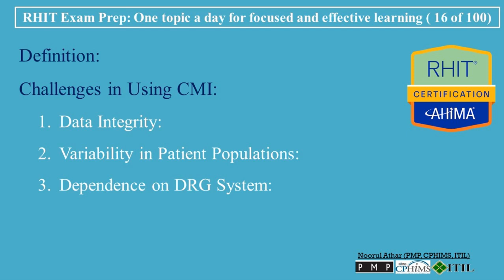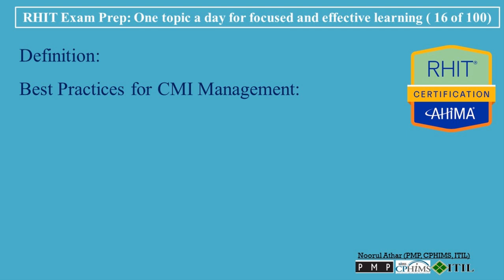3. Dependence on DRG System: CMI is tied to the DRG system. Therefore, changes in DRG classifications or relative weights can impact CMI calculations and trends. 4. Training Requirements: Staff must be adequately trained in coding practices to ensure accurate data collection, which is essential for reliable CMI calculations.